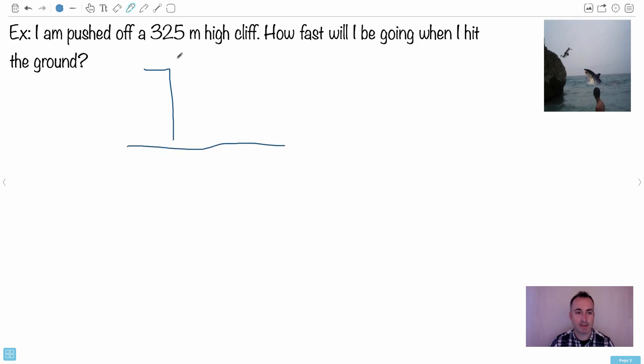So here's the cliff here, here's me, not good. There we go, not happy. So what happens is this height right here is 325 meters and the question is how fast will I be going when I hit the ground?